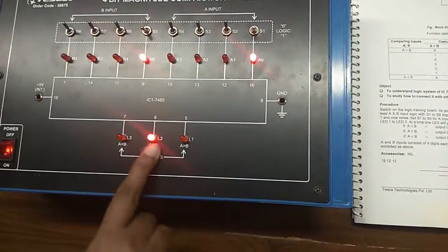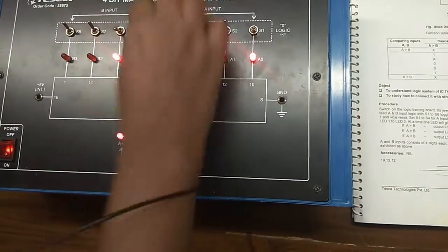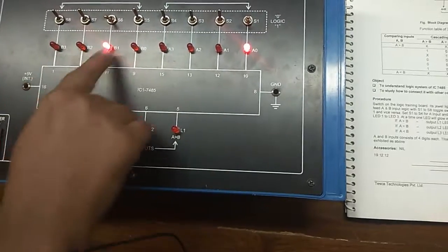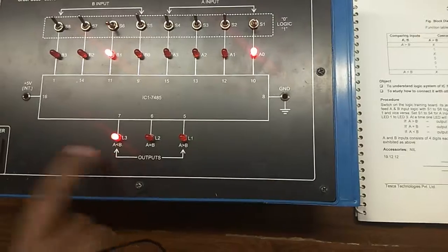If I give the same input on both sides, it will be A equals B. Now if I give 0010, which is 2, and 0001, which is 1, my result is A less than B.